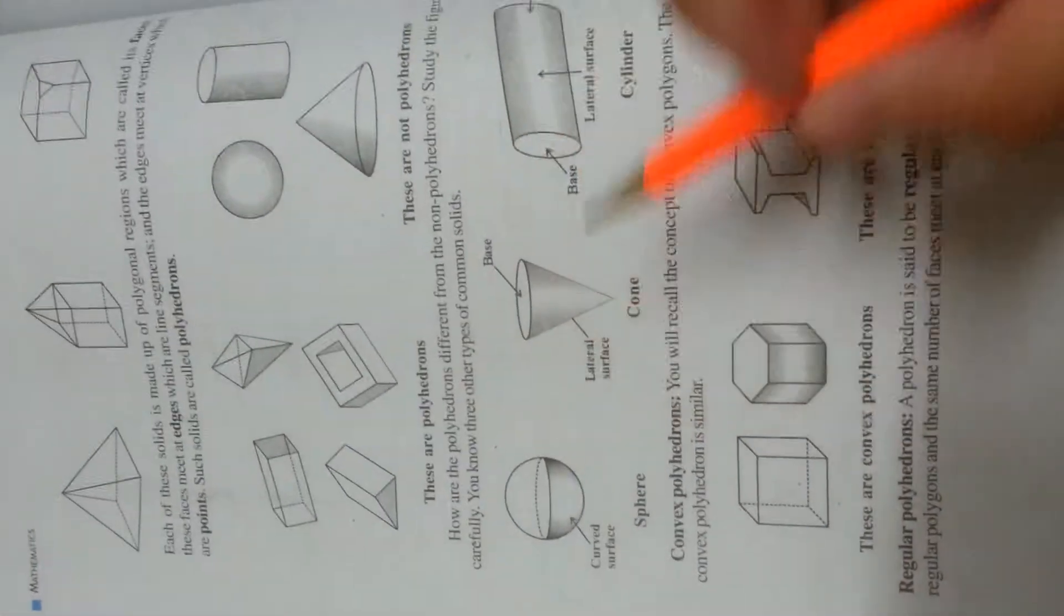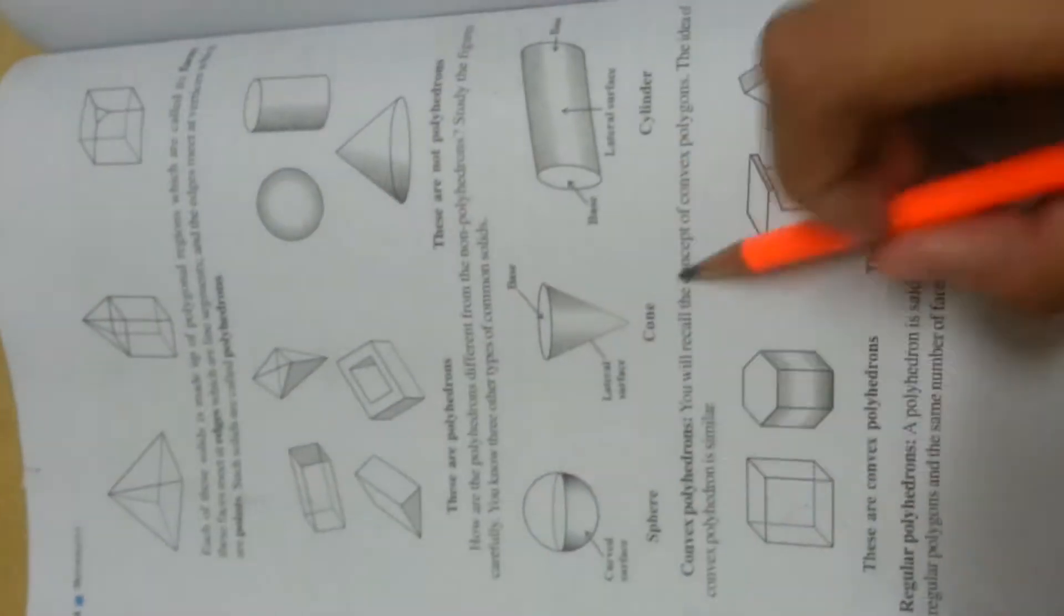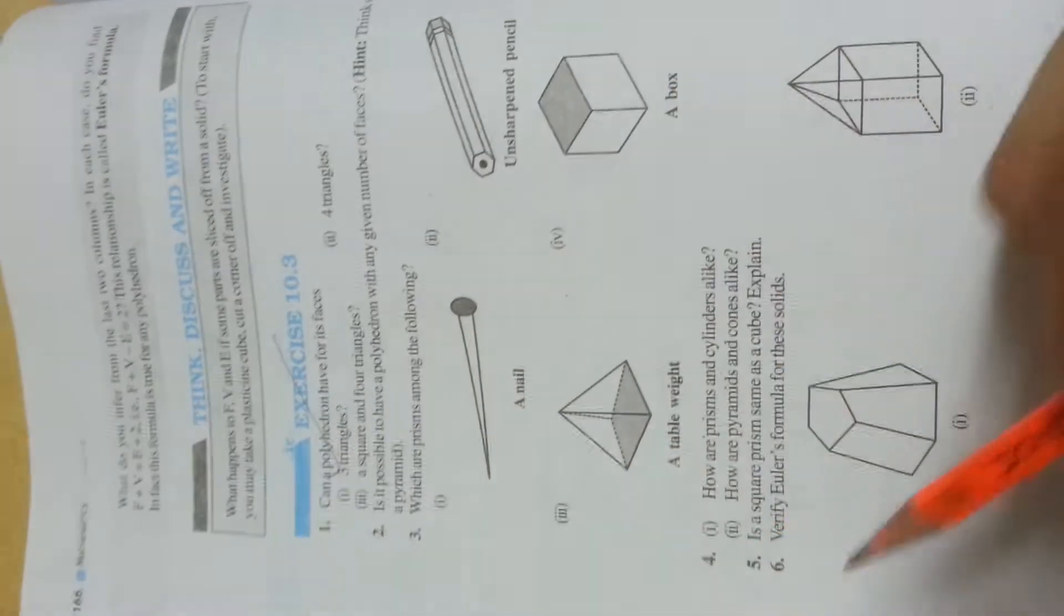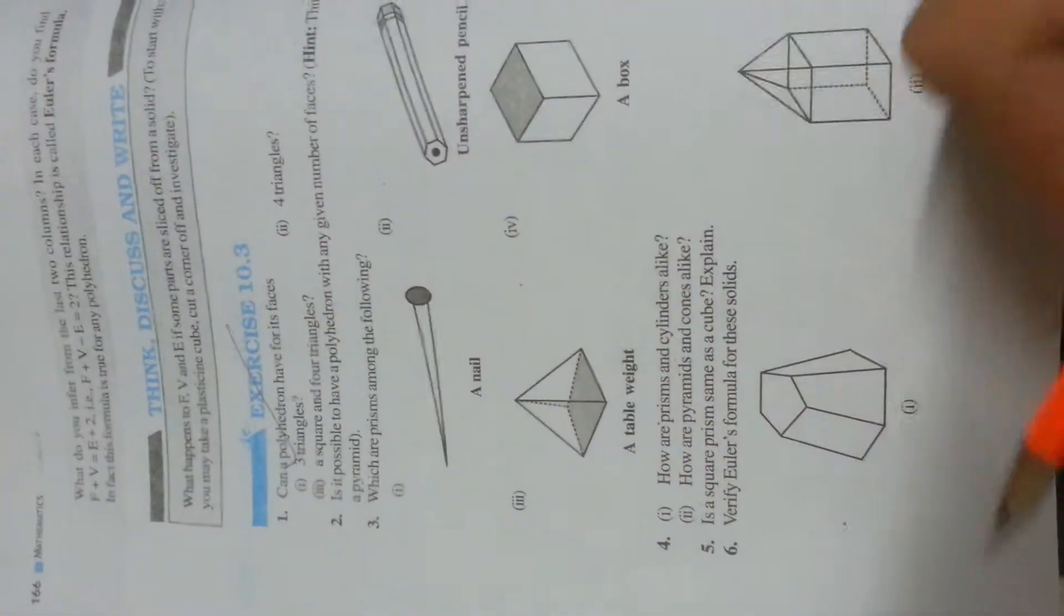You need to know polyhedron, convex polyhedron, and regular polyhedron. So you need to keep this in mind. Then prism and pyramid, which is a must-know. And after that, this exercise is important, because as I said earlier...